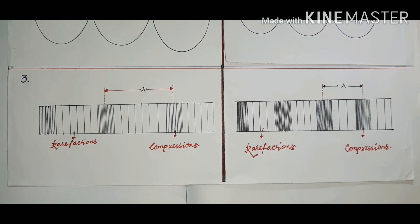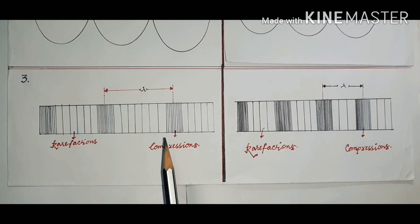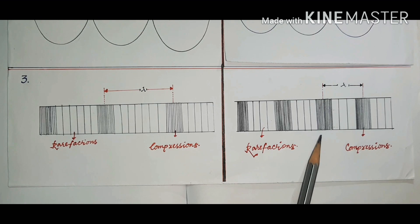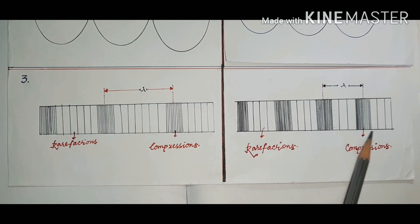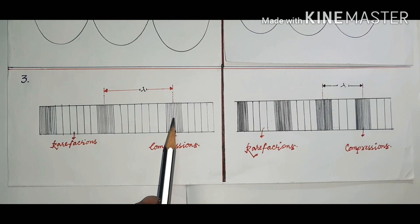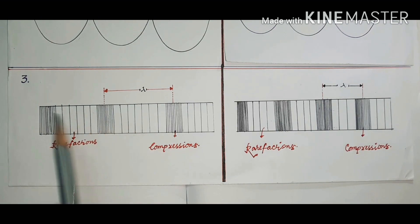In the case of longitudinal waves, the wave with more compressions is more frequent. For example, one wave here has three compressions, making its frequency less compared to the wave with more compressions.